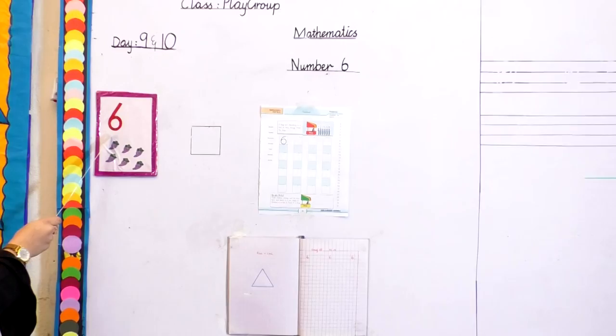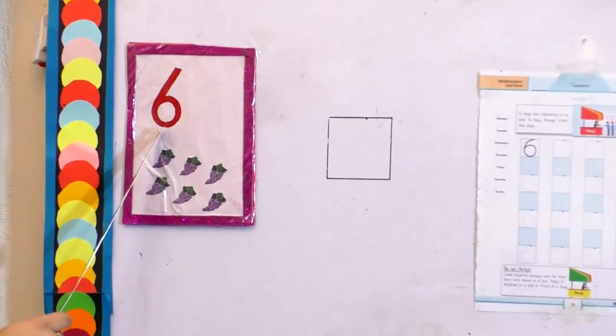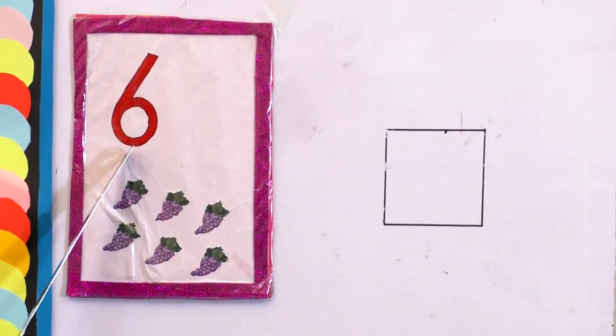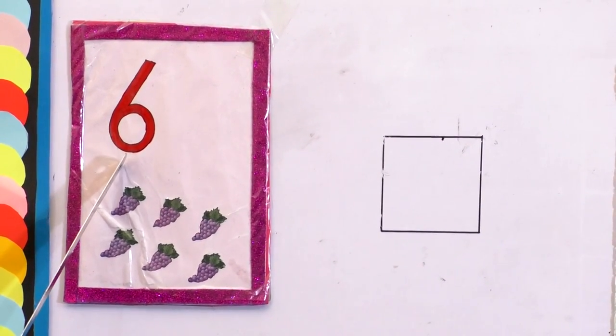Which number is this? 6. Which number is this? 6. It comes after 5. It comes after 5. Which number is this? 6.